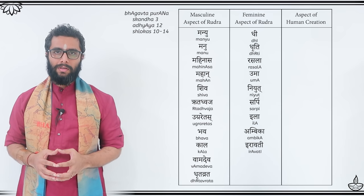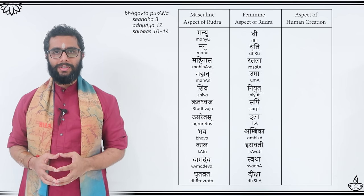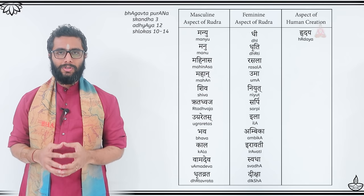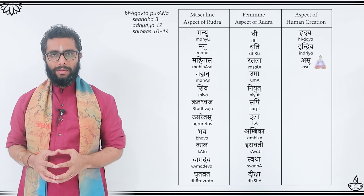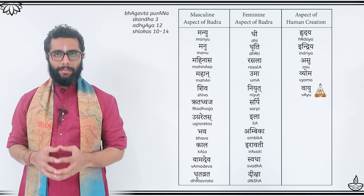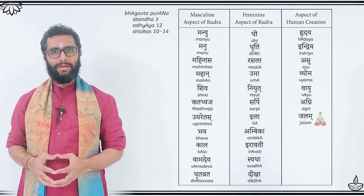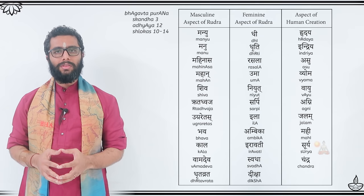These masculine and feminine energies correspond to 11 different aspects of human creation: Hridaya, or the heart — not the blood-pumping organ, but the seat of feelings and sensations — Indriya (the sense organs), Asu (the life breath), Vyoma (the primordial element of space), Vayu (the air element), Agni (the fire element), Jalam (the water element), Mahi (the earth element), Surya (the sun), Chandra (the moon), and Tapas — the radiance that is brought about through austerities.